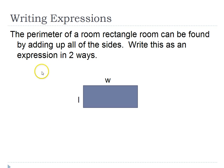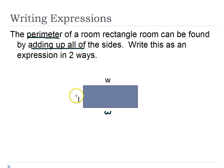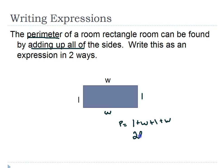This expression is talking about the perimeter. The perimeter of a room can be found by adding up all of the sides, so I'm already going to be doing some adding. The characteristics of a rectangle are that if this side is W, then the opposite is W; if this is L, then the opposite is L. So adding all sides gives L plus W plus L plus W. I can also combine like things: I have two L's and two W's, giving the second expression 2L plus 2W.